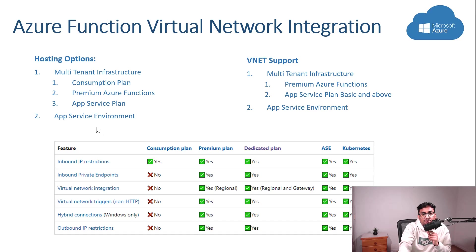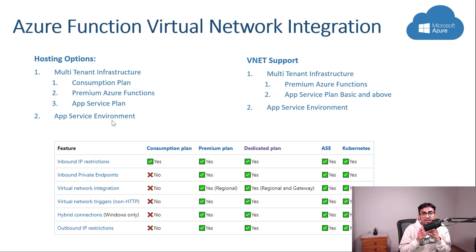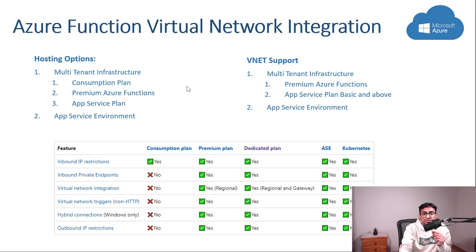Azure Functions mainly has two hosting options: multi-tenant infrastructure and App Service Environment. Within the multi-tenant infrastructure, we can host with a Consumption Plan, Premium Azure Function, and App Service Plan. When we host an Azure Function with App Service Environment, we get a dedicated virtual network — meaning the function is directly hosted within the virtual network. This gives more control over networking options and an isolated environment. Virtual network integration is not supported in all options; it is not supported in the Consumption Plan, and the App Service Plan must be Basic or above to support VNet integration.